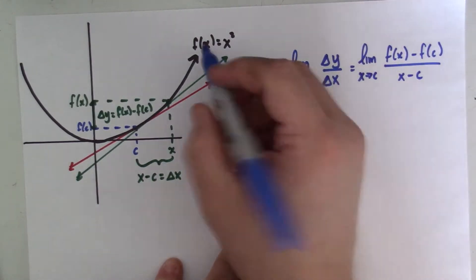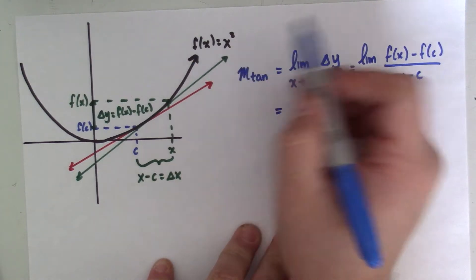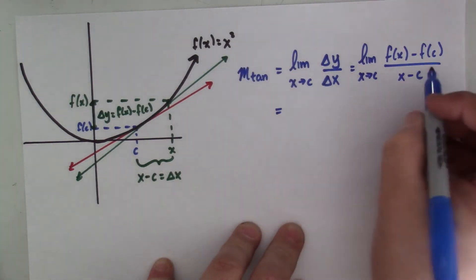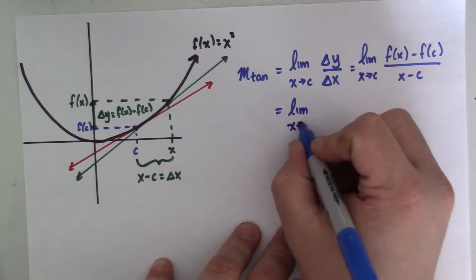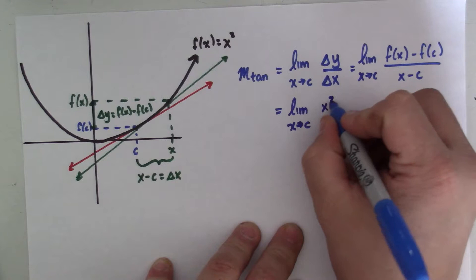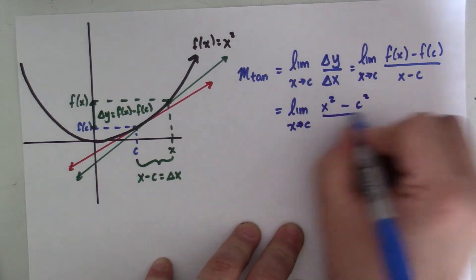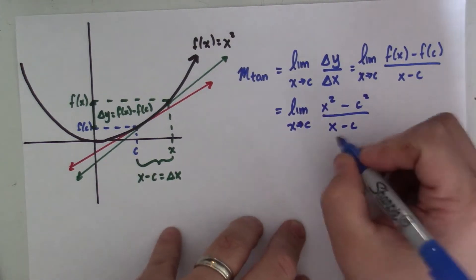Now, we can then substitute in. We said that this function was f of x equals x squared. So f of x is simply x squared, f of c is simply c squared. And all of that is over x minus c.